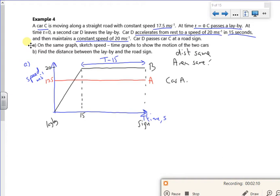So car A is going to be, its distance will be 17.5 times T.